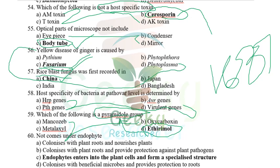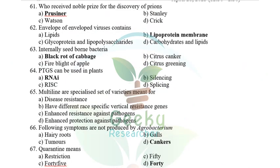Endophyte options given: colonizes plant roots and nourishes; provides protection; enters plant cells and forms specialized structures; colonizes beneficial microbes. The wrong option is that endophytes enter into plant cells and form specialized structures — endophytes do not form specialized structures inside plant cells.